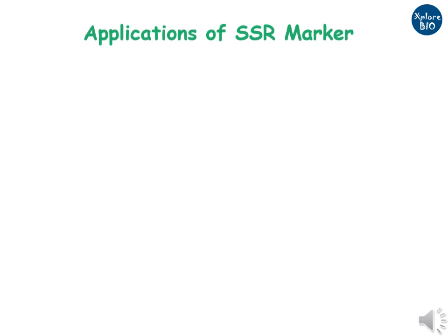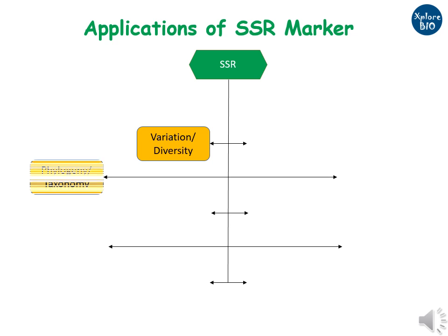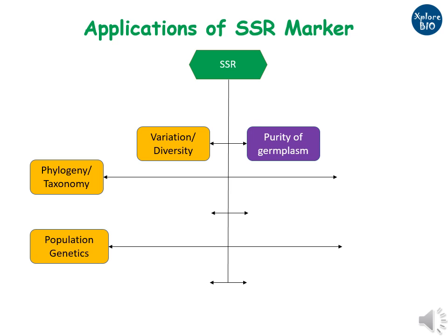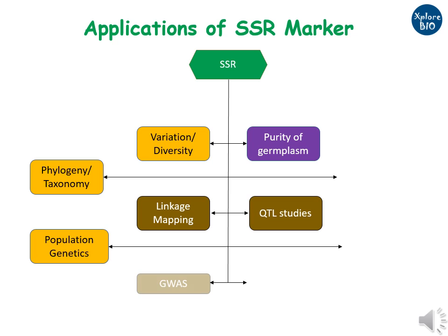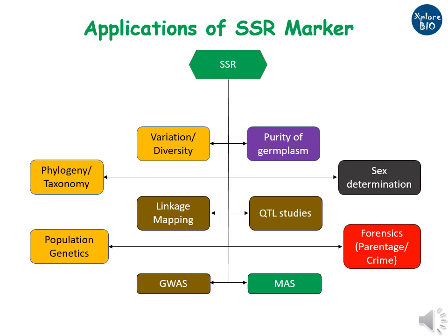SSRs have many advantages, which is why they have so many applications. They are well suited for variation, diversity, phylogeny, and population biology studies. Contamination or purity of plant material or variety can be easily evaluated using SSR markers. Similar to SNP markers, SSRs are well suited for linkage mapping, QTL mapping, and genome-wide association studies to determine marker-trait associations. SSRs are successfully utilized for marker-assisted selection of allied genotypes or to screen traits of interest. Male or female plants can be distinguished using sex-linked markers. SSRs are also successfully used to fingerprint humans for checking parentage and criminal identification.